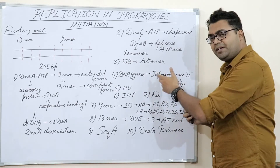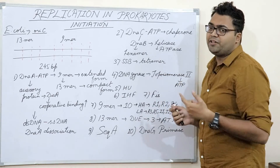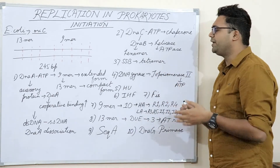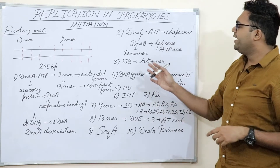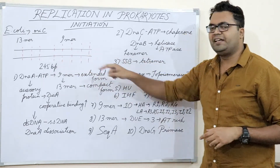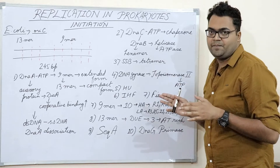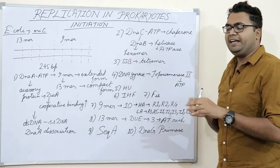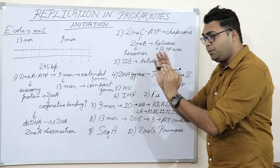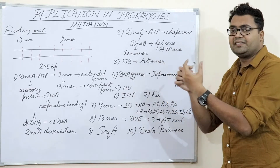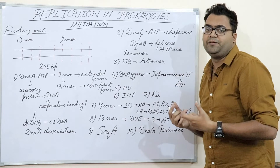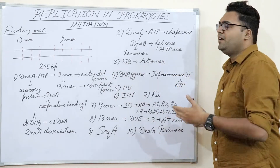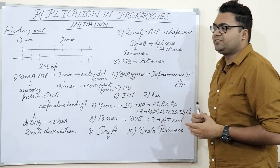The solution is SSB proteins — single-stranded binding proteins — which are tetramers in prokaryotes and trimers in eukaryotes. SSB is also known as replication factor A in eukaryotes. SSB binds to the single-stranded regions and stabilizes them so that renaturation never happens. It does not block template reading — it is like an intercalating agent that does not block Pol III when it is loaded onto the template strand.